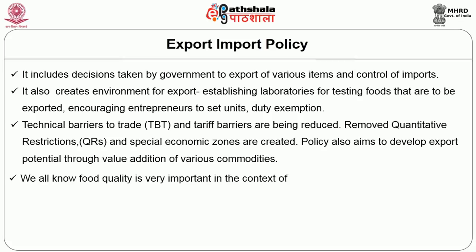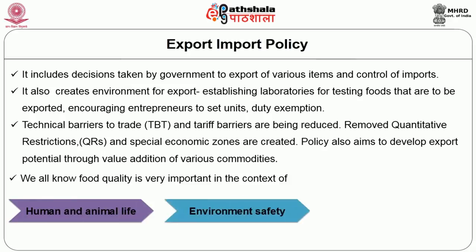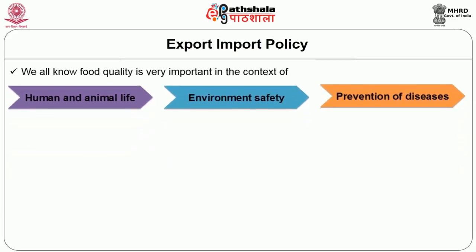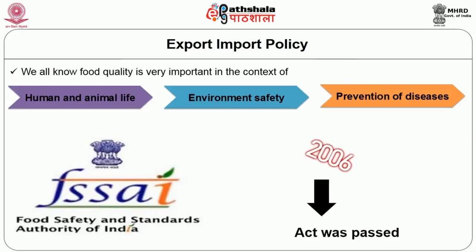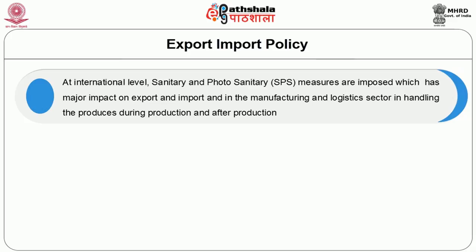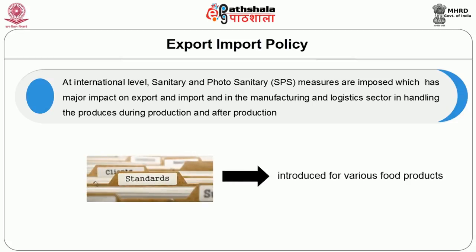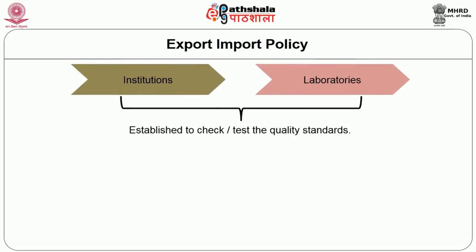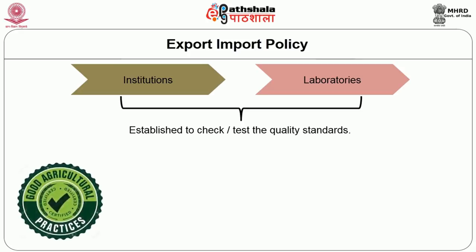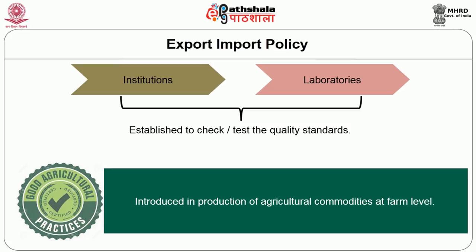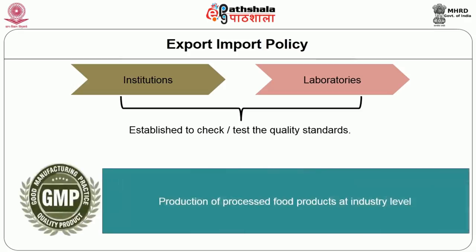Food quality is very important in the context of human and animal life, environmental safety, and prevention of diseases. Hence, the Food Safety and Standards Authority of India, FSSAI, 2006 Act was passed. At the international level, SPS — sanitary and phytosanitary measures — are imposed, which have a major impact on export and import and also in the manufacturing and logistics sector. Standards are introduced for various food products. Institutions and laboratories are established to check and test quality standards. GAP — good agriculture practices — are introduced at farm level. GMP — good manufacturing practices — are introduced in production and processing of food items at industry level.